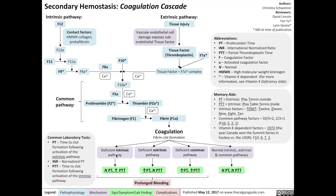To test the intrinsic pathway, the test of choice is the activated partial thromboplastin time (APTT), which is measured from the time that calcium is inserted into the mixture to the time the clot forms. Normally, the clot will form in around 25 to 39 seconds. The APTT accounts for factor 12, prekallikrein, high molecular weight kininogen, factors 11, 9, 8, and calcium, and of course the factors involved in the common pathway: factors 10, 5, 2, and 1. Deficiencies in any of these factors prolongs the APTT.